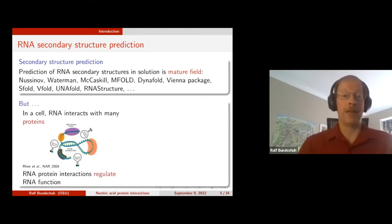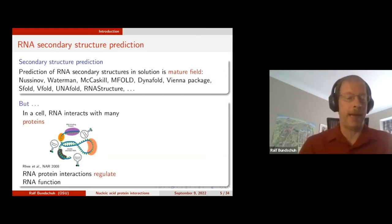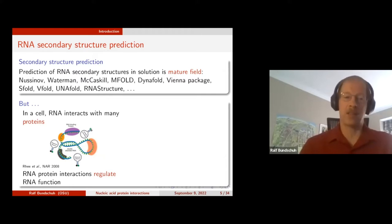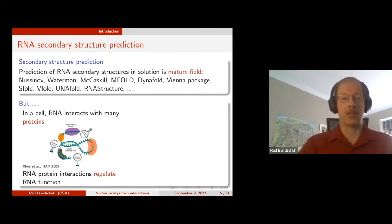However, in a real cell the RNA actually interacts with lots of proteins, and these protein-RNA interactions are important because they regulate RNA function. Which protein binds an RNA will determine how stable the RNA is, where in the cell it will go, whether it will ever be translated by a ribosome, and so on. So it's important to quantitatively understand these RNA-protein interactions.